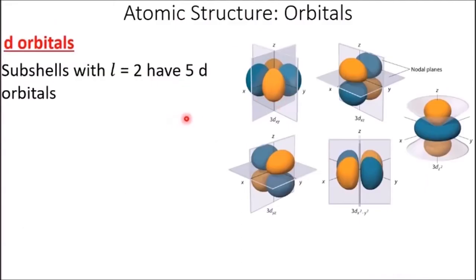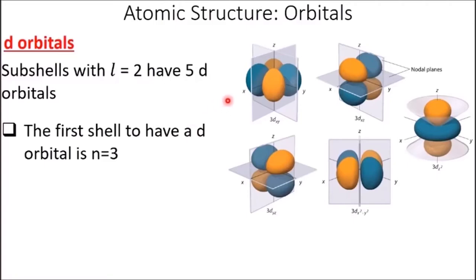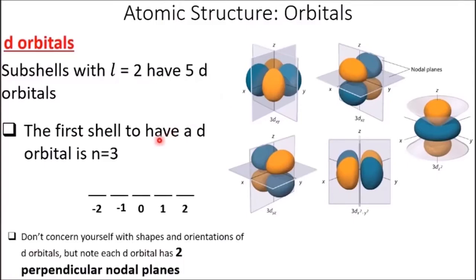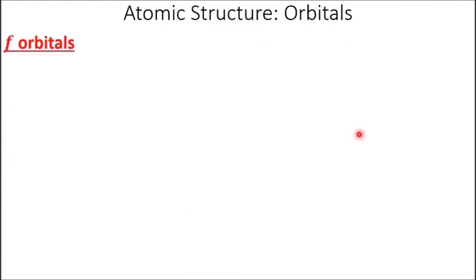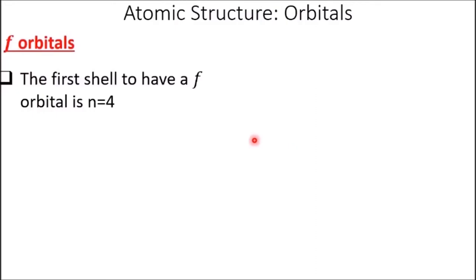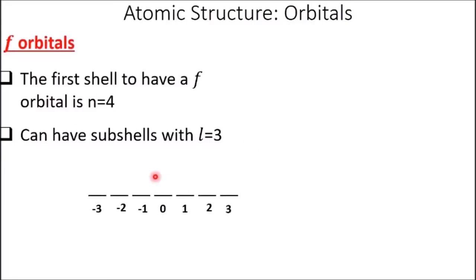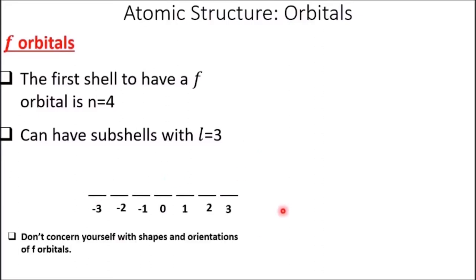D orbitals have L equals 2 and have 5 D orbitals. The first shell to have D orbitals is n equals 3. Since L equals 2, ML can range from negative 2 to 2 — giving 5 D orbitals. You don't really have to know the shapes of D orbitals; just know that each has at least two perpendicular nodal planes. F orbitals: the first shell to have F orbitals is n equals 4, with L equals 3, giving 7 F orbitals ranging from negative 3 to 3. Don't concern yourself with the shapes and orientations of F orbitals.